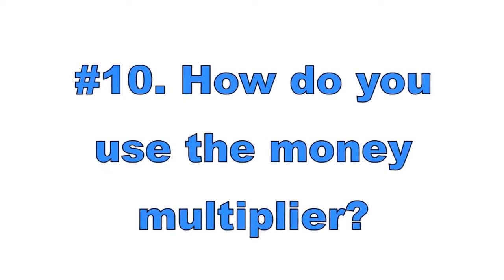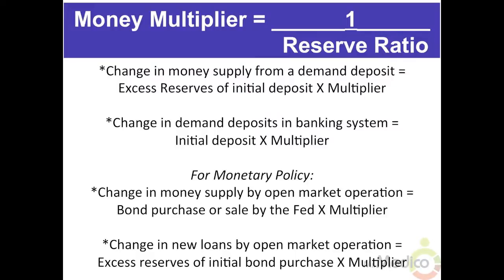Number ten: how do you use the money multiplier? These formulas estimate how much the money supply can potentially increase when banks lend out all excess reserves. A change in money supply from a demand deposit equals excess reserves of the initial deposit times the money multiplier. The change in demand deposits in the banking system equals the initial deposit times the multiplier. For monetary policy: a change in money supply from open market operations equals the bond purchase or sale by the Fed times the money multiplier. Change in new loans from open market operations equals the excess reserves of the initial bond purchase times the money multiplier.